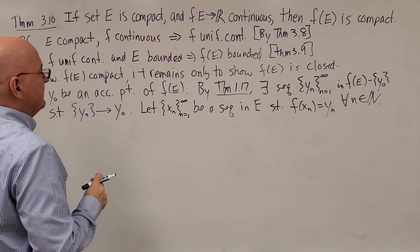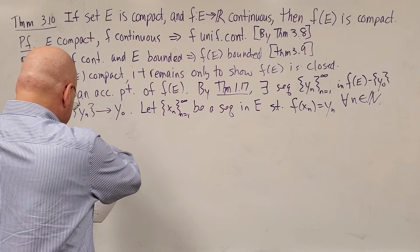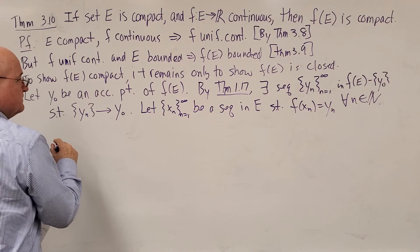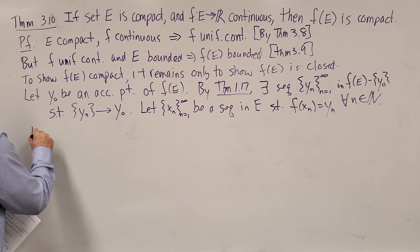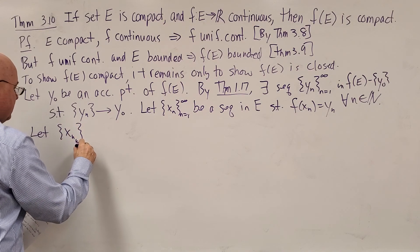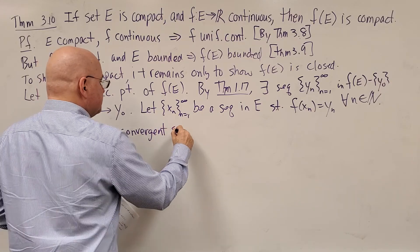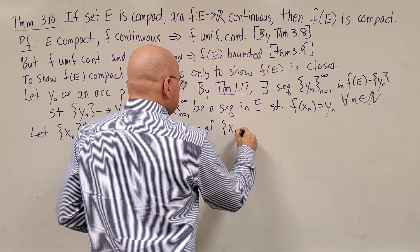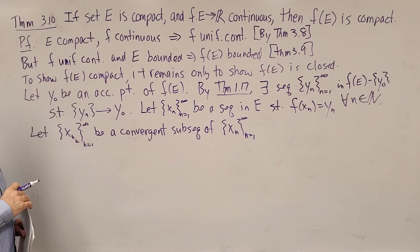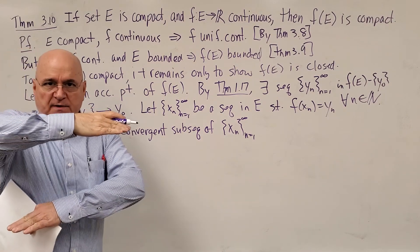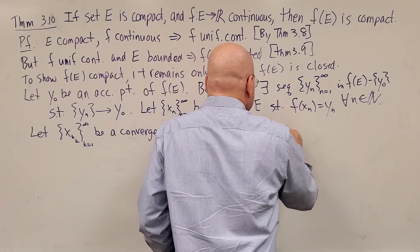Since Xₙ is coming out of a bounded set, it does have a convergent subsequence. Let {Xₙₖ}, K from 1 to infinity, be a convergent subsequence of {Xₙ}. The reason we know this exists is the Bolzano-Weierstrass theorem for sequences: every bounded sequence has a convergent subsequence.